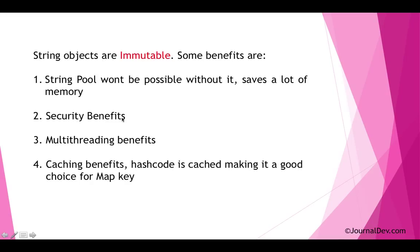Immutability gives us security benefits — for example, if we have a string pointing to the password or username of a database, a hacker can't go and change its value in memory. Also, since it's immutable, it can be used easily in a multithreading environment without worrying about synchronization issues.